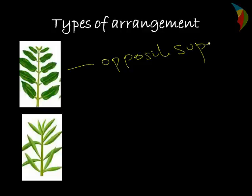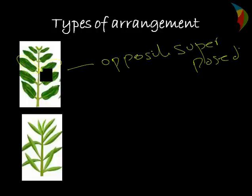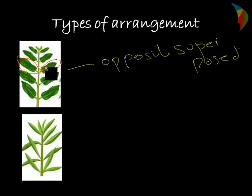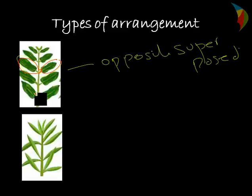The second subtype is opposite superposed. Here, the leaves come from opposite sides of the node in two directions, but the arrangement is directly on top of each other — it is not in a twisted form.